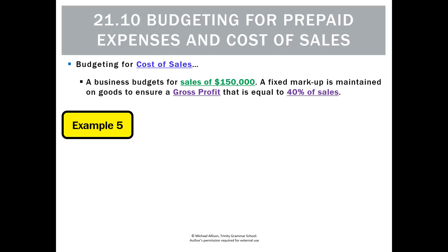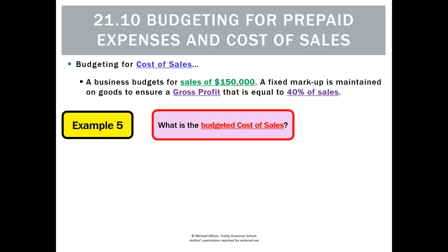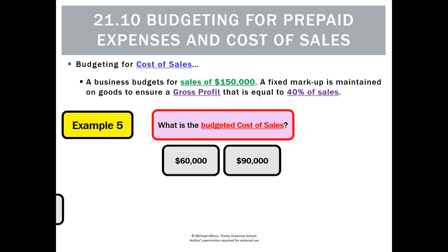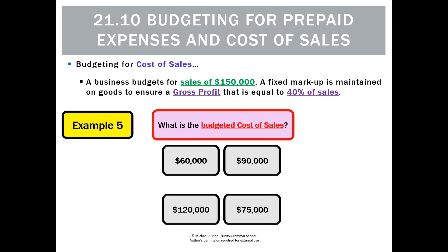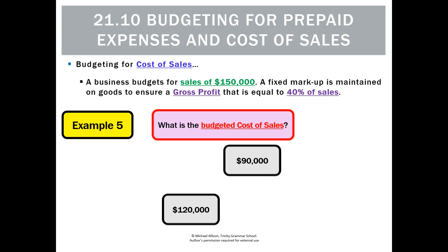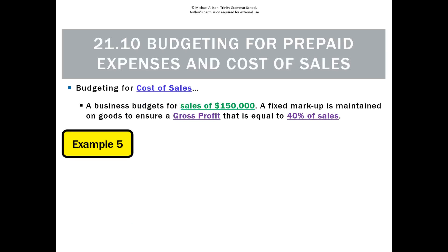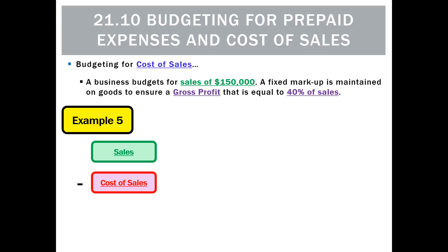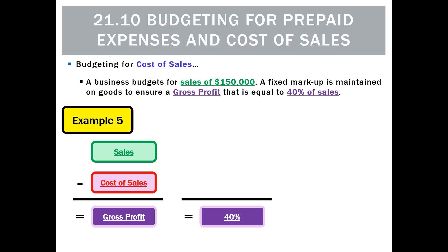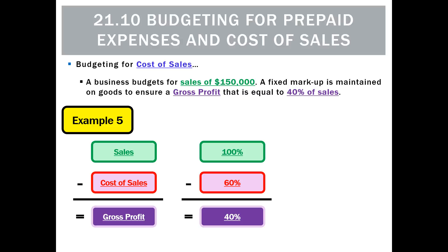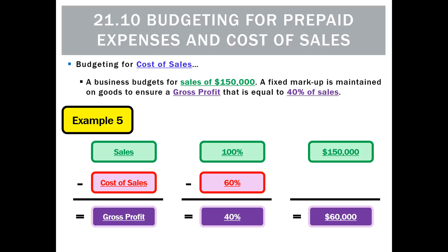One more. What if we budget for sales of $150,000 and a fixed markup is maintained to ensure a gross profit equal to 40% of sales? What is our budgeted cost of sales? Options are $60,000, $90,000, $120,000, or $75,000. The answer is $90,000. Sales are 100% of sales, gross profit is 40% of sales, so cost of sales must be 60% of sales. If sales are $150,000 and gross profit is 40% = $60,000, then cost of sales is the difference: $90,000. As long as you apply the formula each time, it doesn't matter what numbers you get — you'll get the right answer.